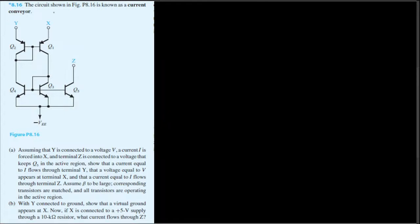Let's look at the A part. Here, 8.16 — the circuit shown in figure 8.16 is known as a current conveyor. The diagram is given, and part A asks: assuming Y is connected to a voltage v, a current i is forced into X, and terminal Z is connected to a voltage that keeps Q5 in the active region. We need to show that a current equal to i flows through terminal Y, a voltage equal to v appears at terminal X, and a current equal to i flows through terminal Z. Assume beta to be very large, corresponding transistors are matched, and all transistors are operating in the active region.